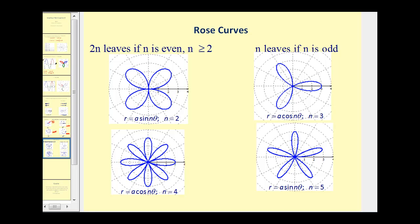And lastly, we have the rose curves. If you take a look at the form r equals a sine n theta, and r equals a cosine n theta, we have two times n leaves if n is even, and n is greater than or equal to two. So here we have four petals, so that means n would be two. Here we have eight petals, so n is actually four. However, if n is odd, we only have n leaves.